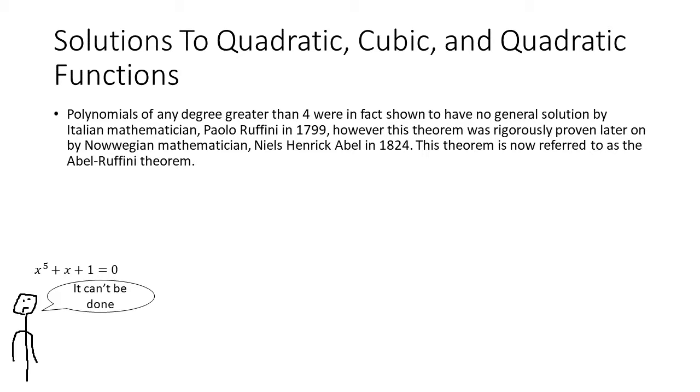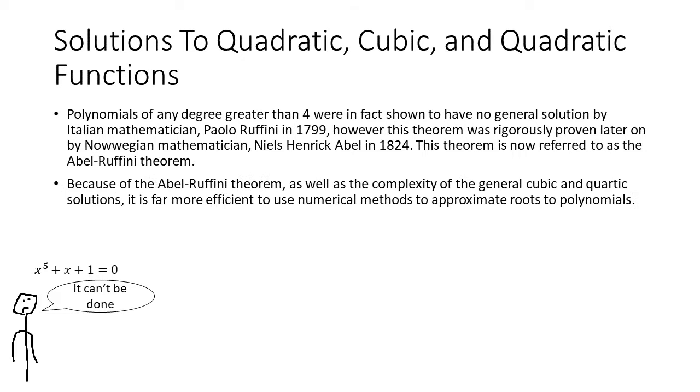However, in 1799, Italian mathematician Paolo Ruffini was able to extend upon the work of Niels-Henrich Abel to rigorously prove that for any polynomial of degree greater than 4, there does not in fact exist a general solution. This theorem is now commonly referred to as the Abel-Ruffini theorem.